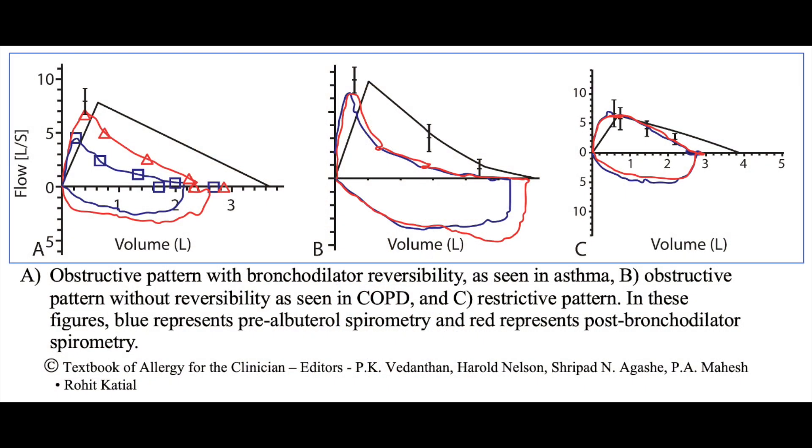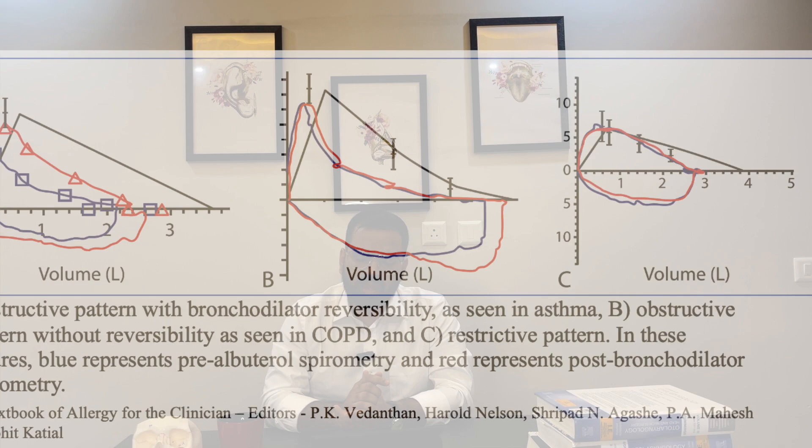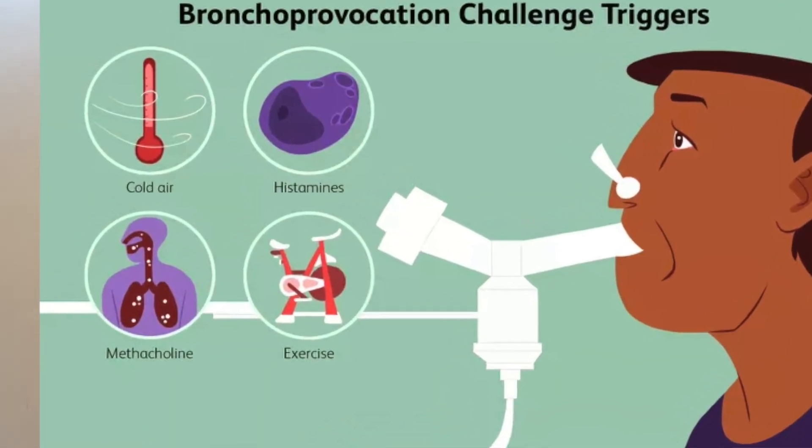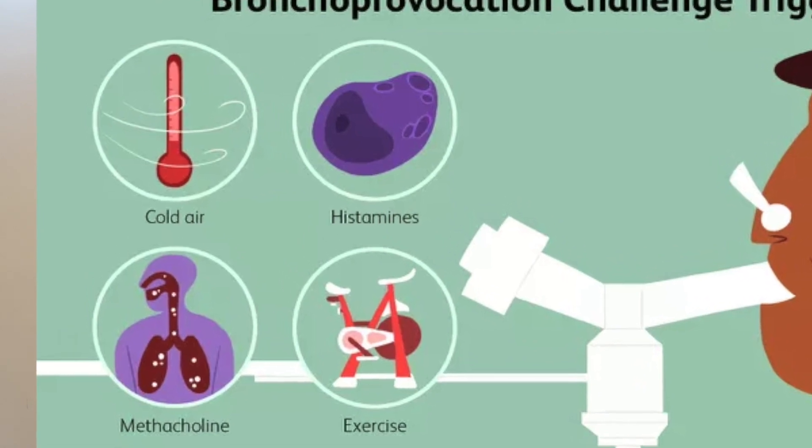In spirometry, the expiratory airflow limitation is seen as a reduction in the ratio of FEV1 to FVC. The variable nature of this limitation is signified by a positive bronchodilator reversibility, which means that the FEV1 increases by more than 12% after administration of inhaled salbutamol. A significant increase in lung function is noted after four weeks of anti-inflammatory treatment. Other tests for asthma include exercise challenge test, bronchial challenge test, allergy testing, and fractional concentration of exhaled nitric oxide.